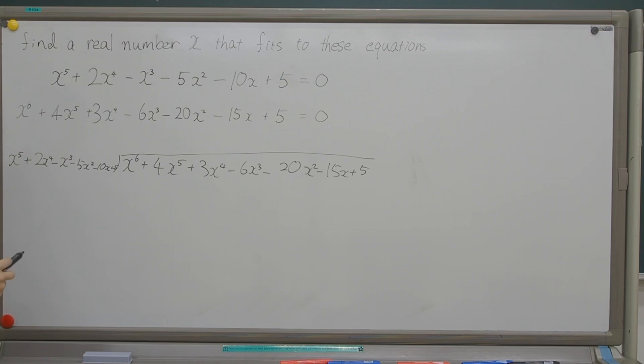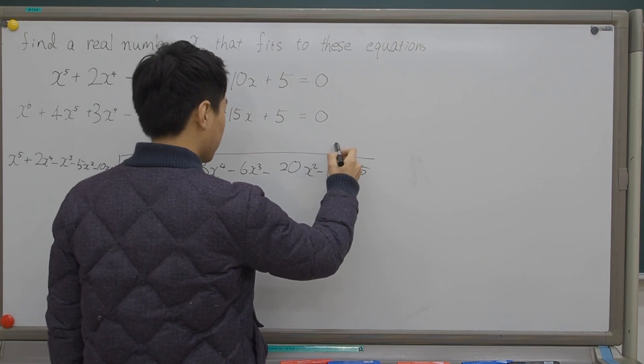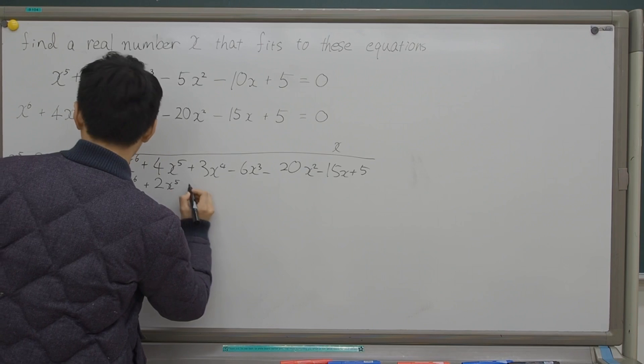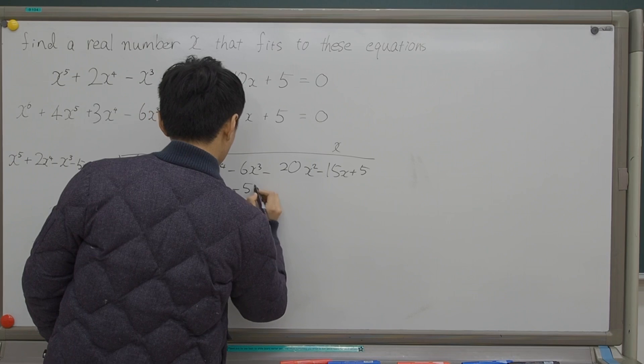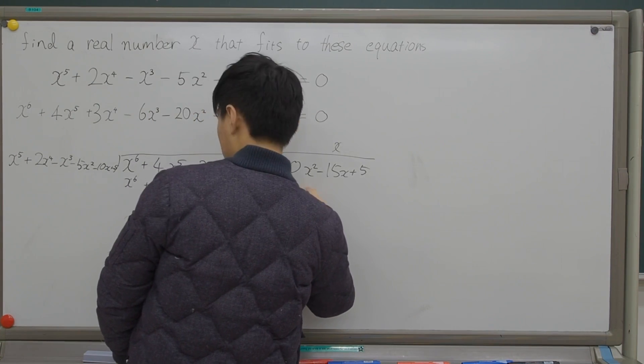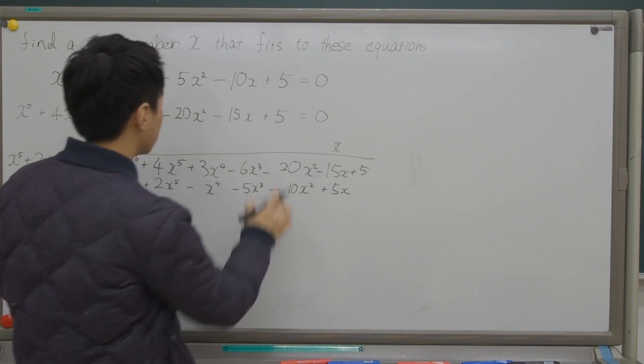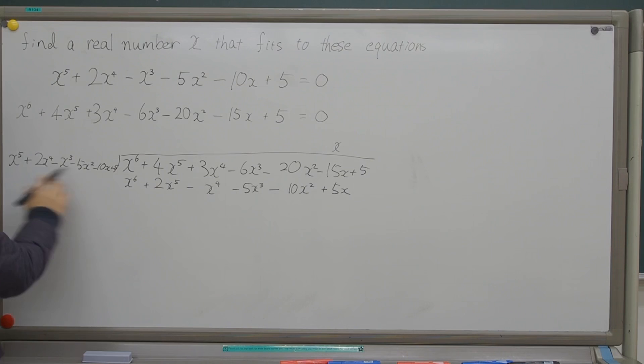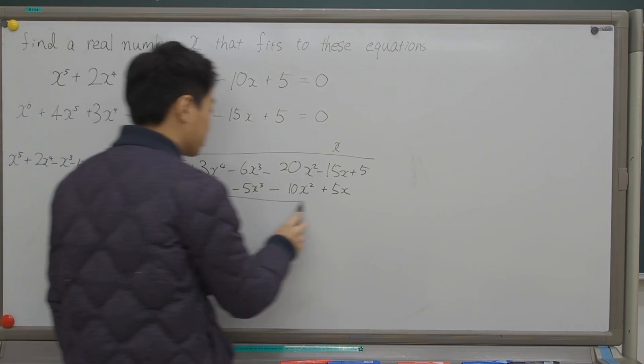Okay, so x^5 - what would make it x^6 is you times it by x here. So, x^6 + 2x^5 - x^4 - 5x^3 - 10x^2 + 5x. So what I did is you multiply this by that so that you get rid of this x^6, and then you just simply subtract everything from here.